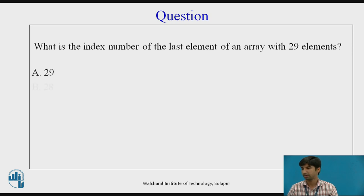A: 29, B: 28, C: 0, D: Programmer-defined. So what is the index number of the last element of an array with 29 elements? It means the size of an array is 29. So basically when we had declared an array, it said for i equal to 0, that is the starting reading of the array element starts from 0 location. So it will be 29 elements is 29 minus 1, which is 28. So the option will be B.